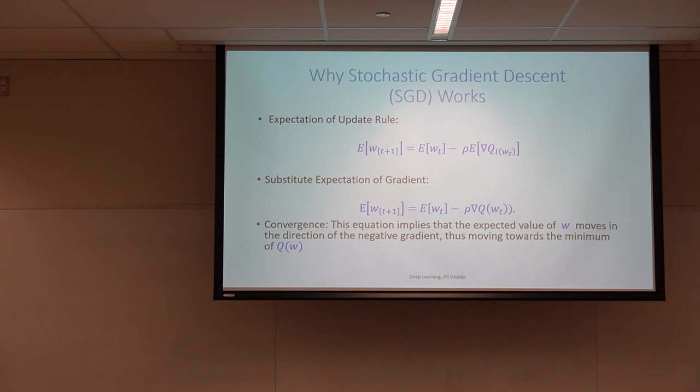If you take the expectation from both sides, then the second term on the right-hand side on expectation would be the gradient of the cost.